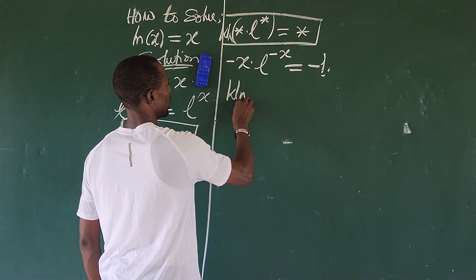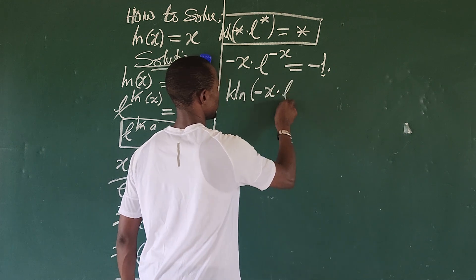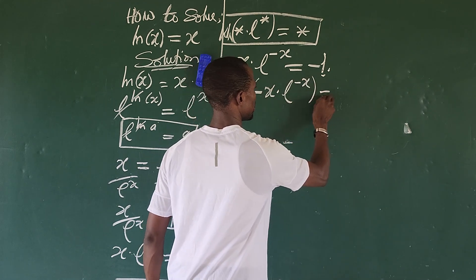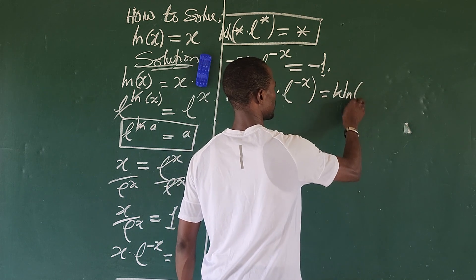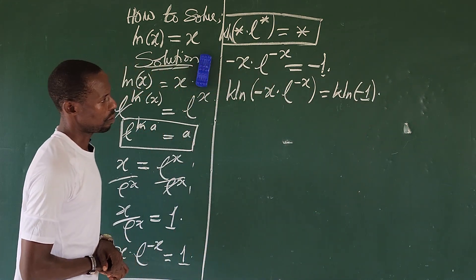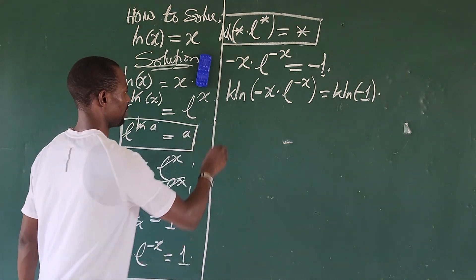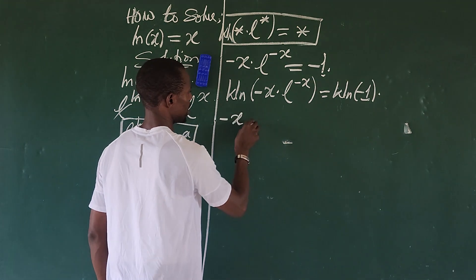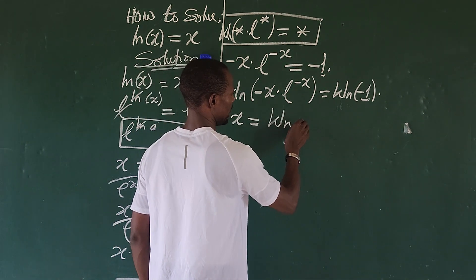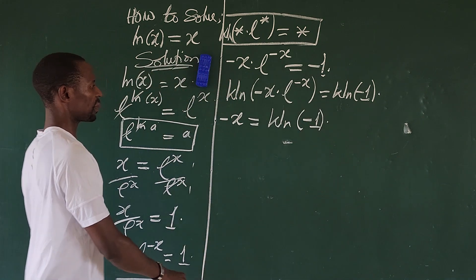Now the Lambert W function can come into play. Taking the Lambert W of both sides: W(minus x times e to the power of minus x) equals W(minus one). By the definition of the Lambert W function, the left side simplifies, giving us minus x equals W_n(minus one).